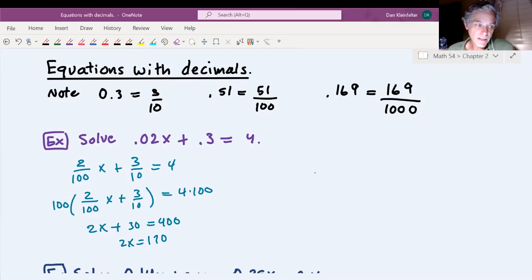2x is equal to 370. And that's going to be... sorry, 185.